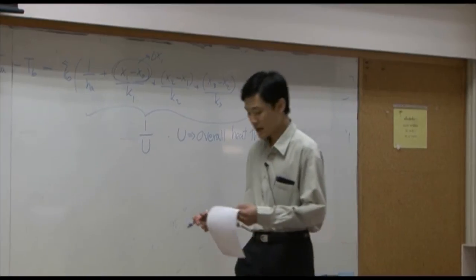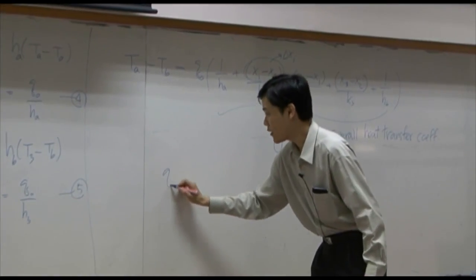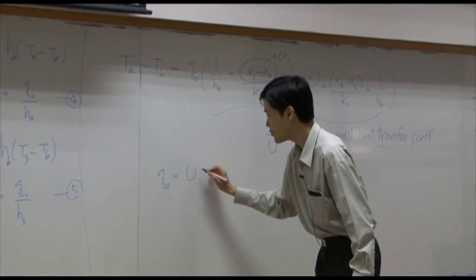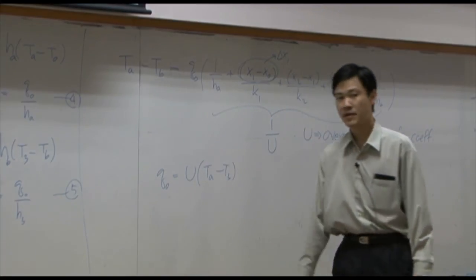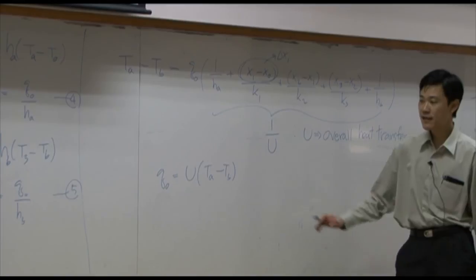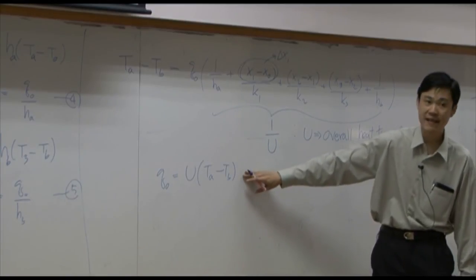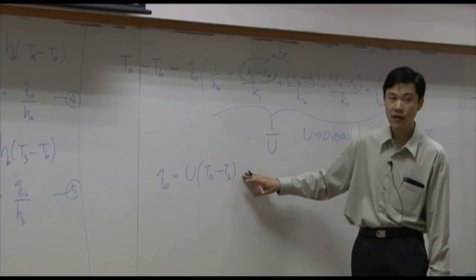If you reduce this equation, you end up with Q0 equal to U times Ta minus Tb. So once again, this is the same form as Newton's law of cooling.